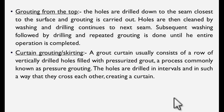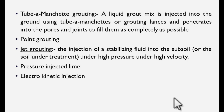Curtain grouting consists of a row of vertical drilled holes filled with pressurized grout — a process known as pressure grouting. The holes are drilled at intervals so they cross each other, creating a curtain. This is mainly used for water-retaining structures such as dams and bridges. Tube-à-manchette grouting: a liquid grout is injected into the ground using grouting lances, penetrating into pores and joints to fill them as completely as possible. Point grouting and jet grouting involve injection of stabilizing fluid into the subsoil under high pressure and high velocity. Other methods include pressure-injected lime and electrokinetic injection.